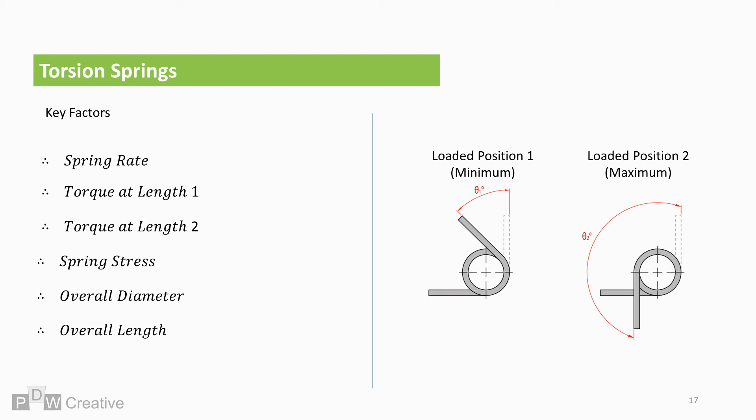The overall length may sound irrelevant but if we rotate in the direction the coils were formed then the overall length of the spring will increase so again it needs to fit in the assembly.